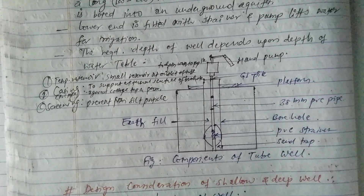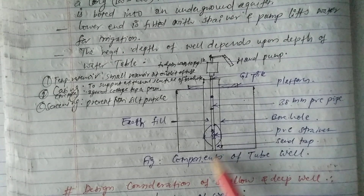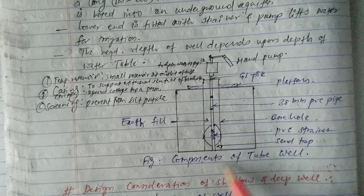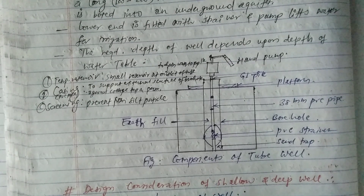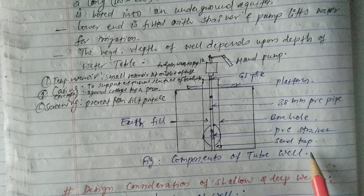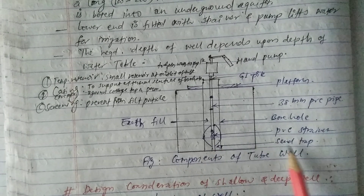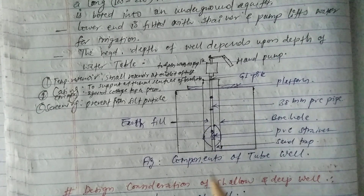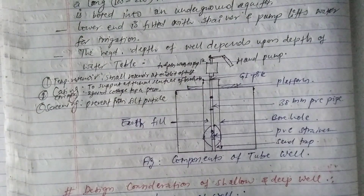There is also a sand trap provided in the lower portion. The sand trap helps to increase the quality of water by trapping the sand underground. When there is a large amount of sand present, it may come to the surface of the ground — that is why we use the sand trap. So the PVC strainer and sand trap are provided at the bottom.